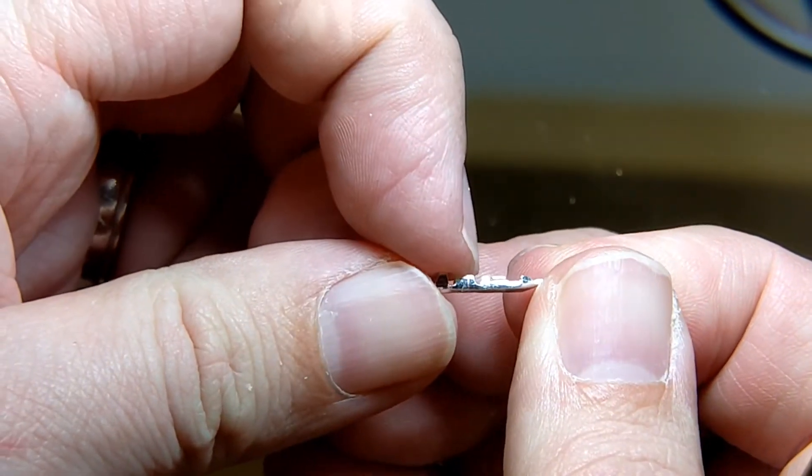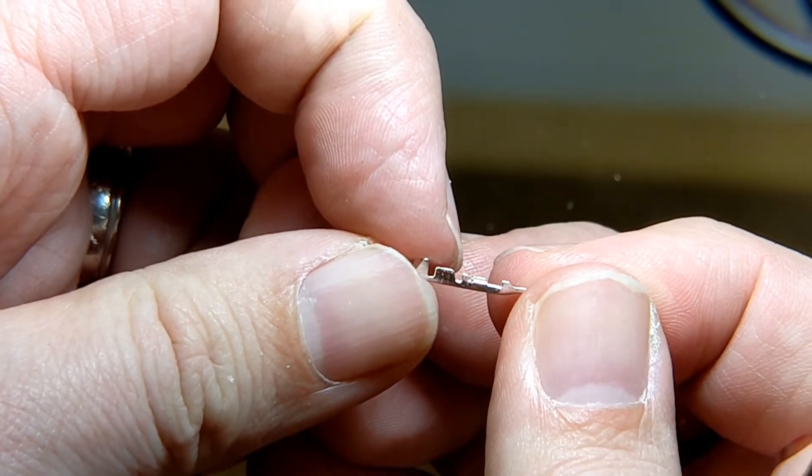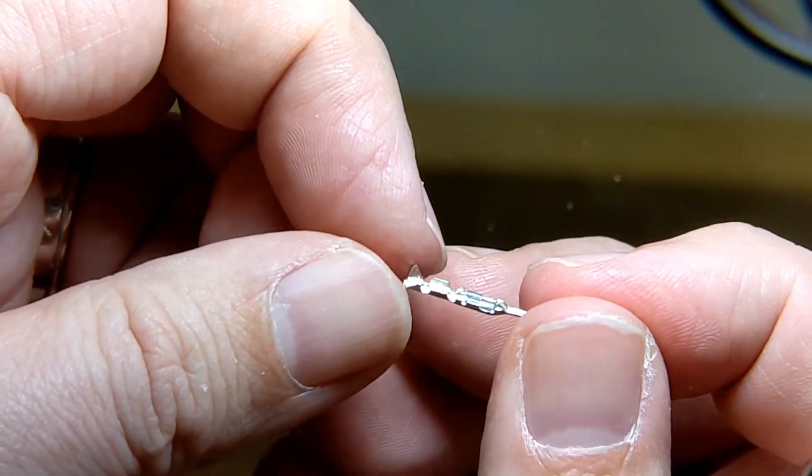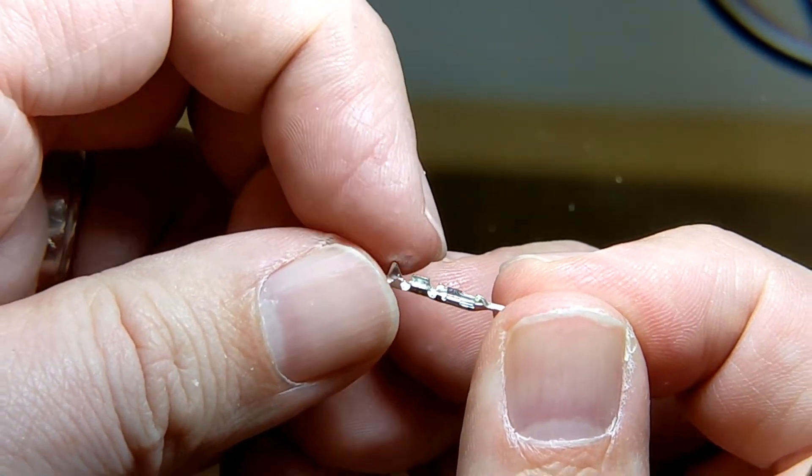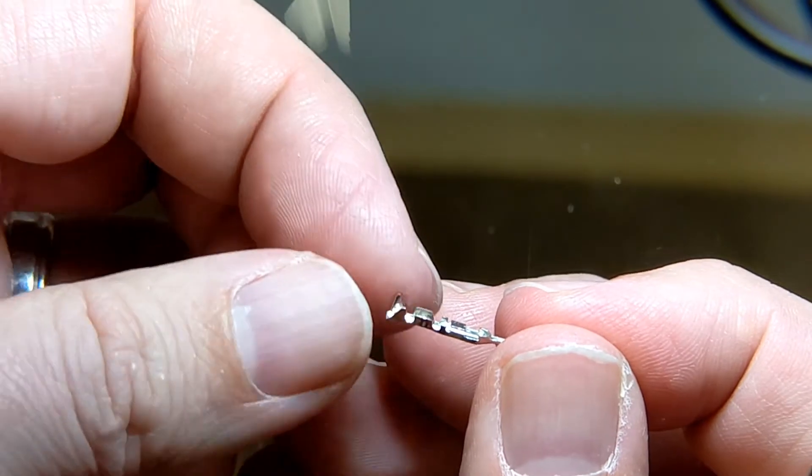And then in front of that, you have these two tiny tabs that stick up. These are important when you go to insert the pin into the housing. Those are the little tabs that stick up and help click it into place.